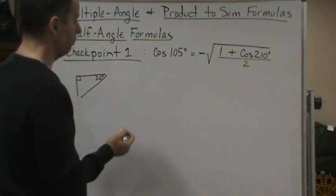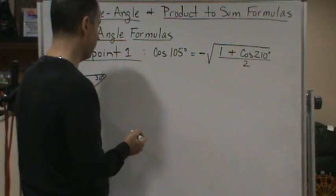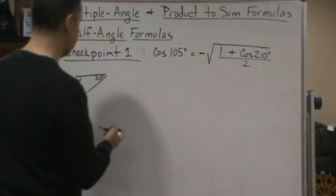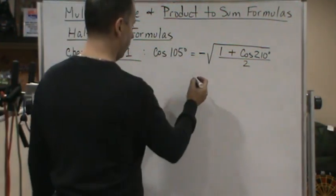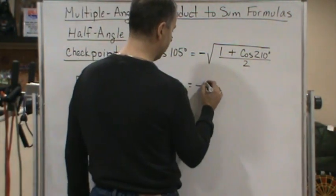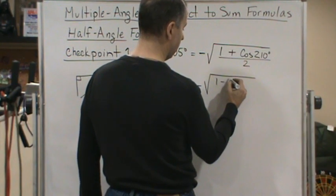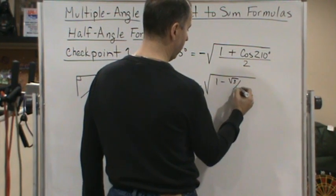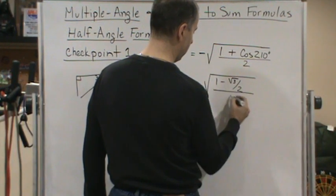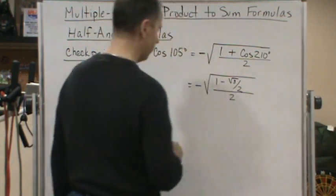Cosine is going to be square root of 3 over 2. So that means this is going to be negative 1 minus the square root of 3 over 2, all over 2.